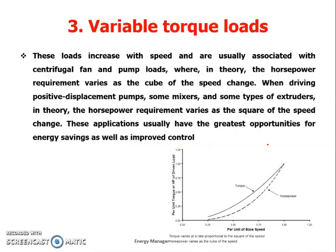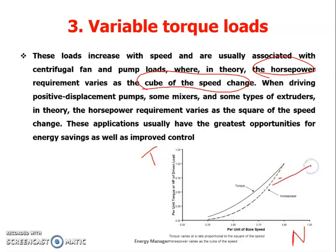The third type is variable torque loads, which are the most common type of loads in industry — for example, centrifugal pumps and centrifugal fans. In these, horsepower is normally proportional to the cube of the speed change, so a very small change in speed can result in a large reduction in energy consumption. This offers significant energy saving opportunities. Both torque and power vary with speed, so it is a variable torque and variable power load.